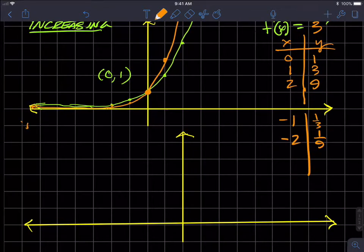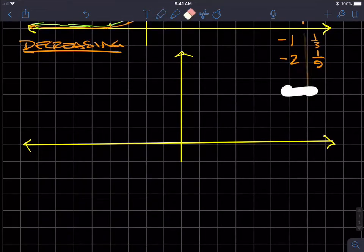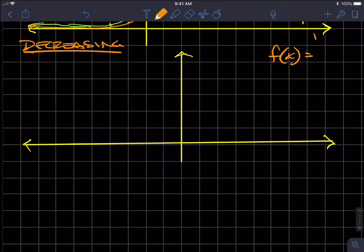Now, if we go to the decreasing function, let's go ahead and erase this. And we will plot f of x equals 1 half to the x. And so if you recall, A cannot equal 1. It's less than 1, but it's greater than 0. So we're talking about only the bases that are between 0 and 1.